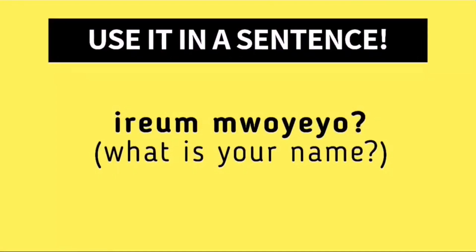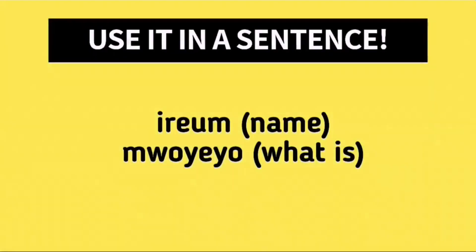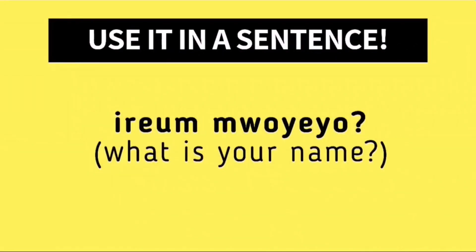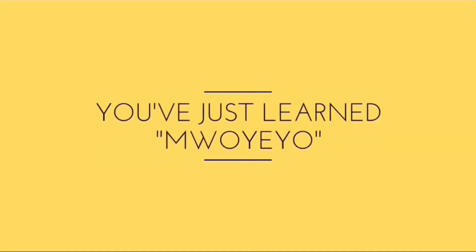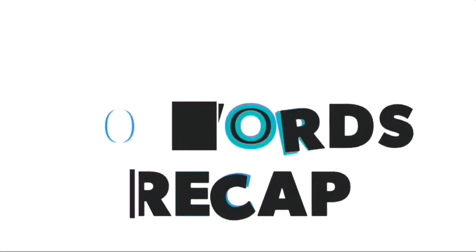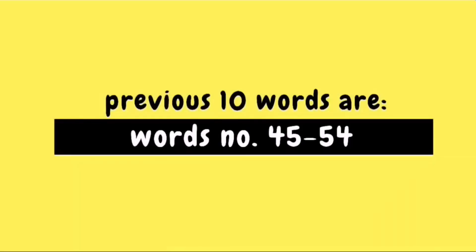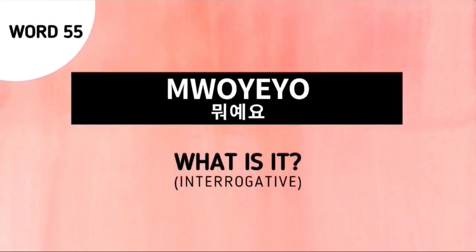Now let's look at this example question: 이름이 뭐예요 (Irum Poeo) or (Irumi Poeo). Irum means 'name' and Poeo is our word for today, used to ask 'What is it?' So when we say Irum Poeo or Irumi Poeo, it's the same as saying 'What is your name?' in Korean. And with that, you've just learned 뭐예요 (Poeo). Now let's proceed to our previous 10 words recap. Our previous 10 words are words number 45 to 54. Our word for today is word number 55, Poeo, used to ask 'What is it?'